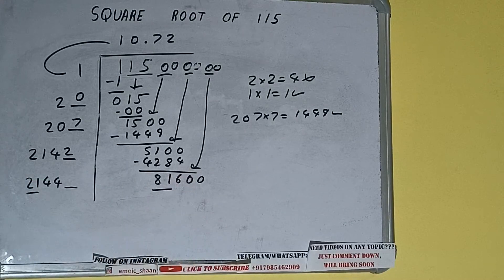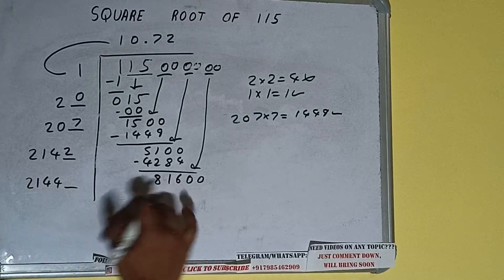Now compare this 21 and 81. So 21 times 4 is 84, so we cannot take 4 times. We have to take 3 times.